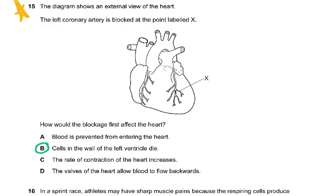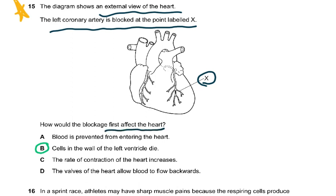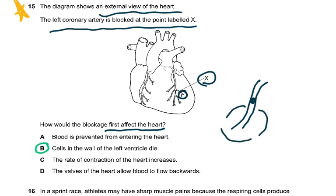Question fifteen: the diagram shows an external view of the heart. The left coronary artery is blocked at point X. How would the blockage first affect the heart? Cells in the wall of the left ventricle will die, because the blocked vessel at X can no longer supply glucose and oxygen to those cells, causing them to die.